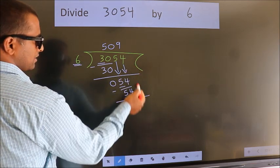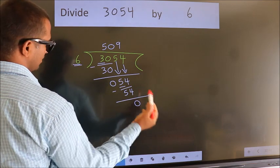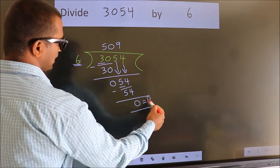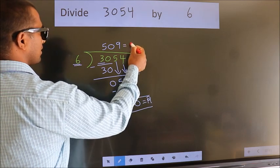No more numbers to bring it down. So we stop here. This is our remainder. This is our quotient.